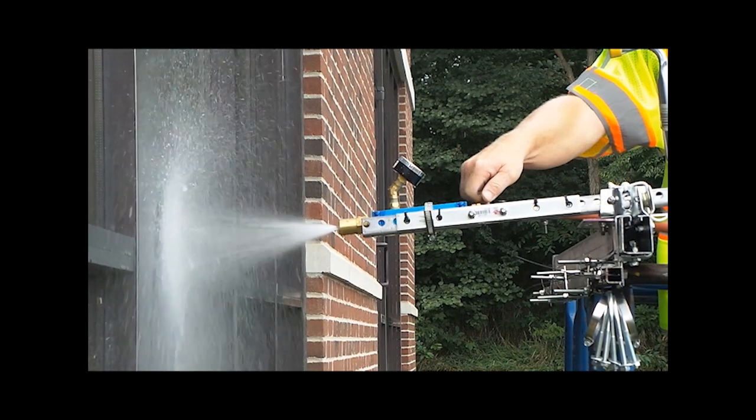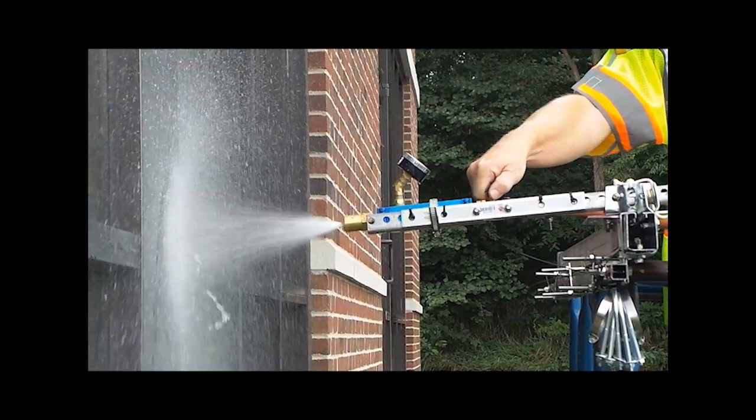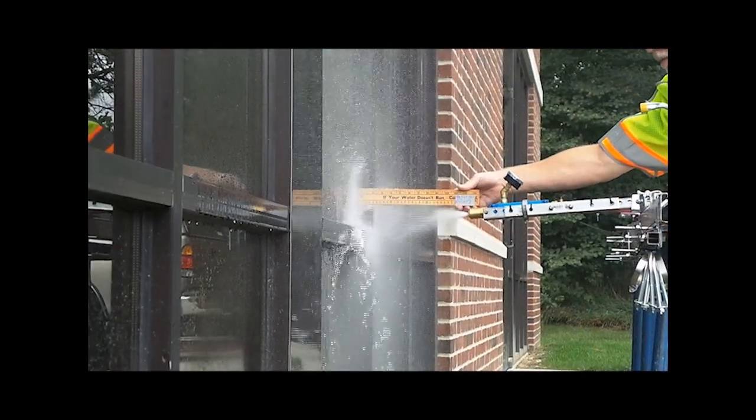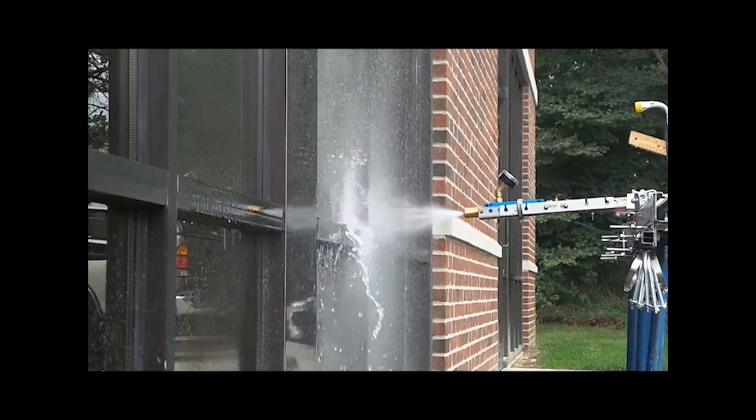The process involves the use of a calibrated nozzle to deliver a specified flow rate and spray pattern at a fixed distance along all joints and seams in the glazing assembly.